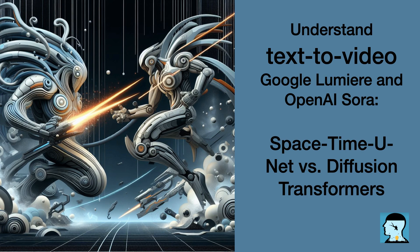On the other hand, Sora's Diffusion Transformers are like small puzzle pieces that you have to assemble one by one. It may take more time to put them together, but you can focus on each piece carefully. In terms of efficiency, Lumiere's space-time unit can quickly create the entire video from text in one go, which is like solving a puzzle in one swift motion. This can be faster for generating videos, especially shorter ones. In contrast, Sora's Diffusion Transformers build each frame step by step, which may take longer but allows for more detailed adjustments and fine-tuning along the way.